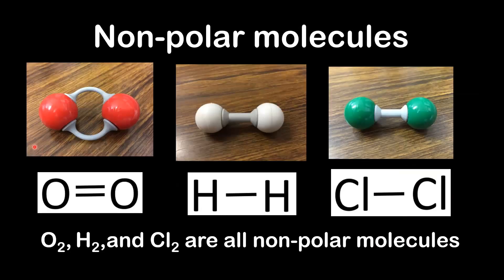Let's start with non-polar molecules. We have three diatomic molecules: O2, H2, and Cl2. All three molecules are non-polar because the atoms are the same, so there's no difference in electronegativity — therefore they are non-polar molecules.